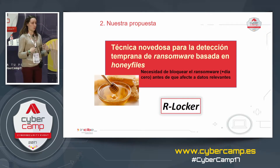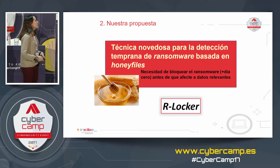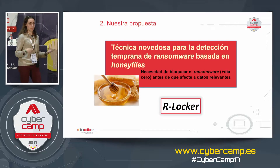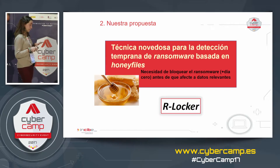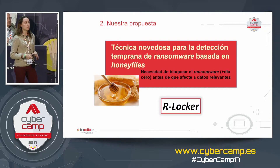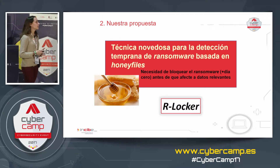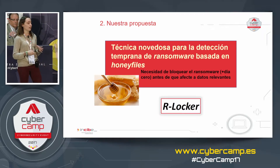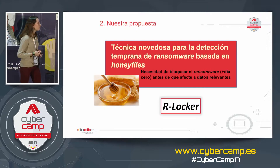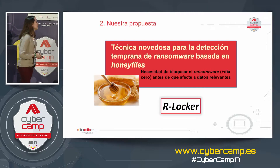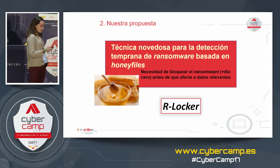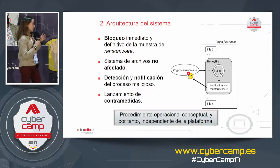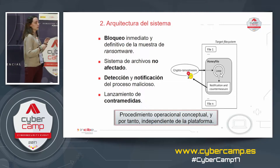As Jose Antonio has said, we focused on encrypted ransomware — the most harmful type. Once they encrypt your files, if we don't have the private keys, we can't decrypt them. So we need to detect and block ransomware before that encryption takes place. We designed an early detection system based on honey files, and we've called this tool R-locker — like a play on ransomware and locking.